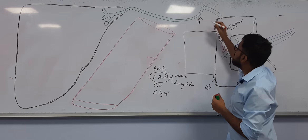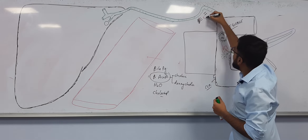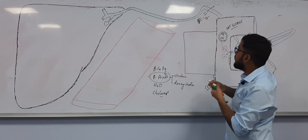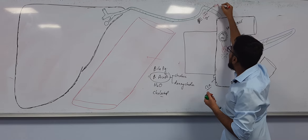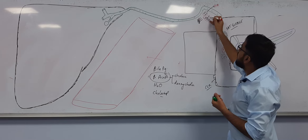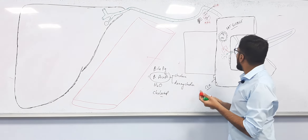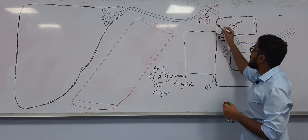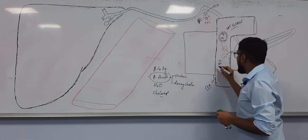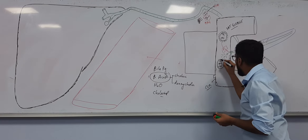Pancreatic lipase breaks only two chains of fatty acids from the triglyceride. What remains are two free fatty acids and a glycerol with one fatty acid — this is called monoacylglycerol. So triglycerides are broken down into free fatty acids plus monoacylglycerol; cholesterol is not disturbed.